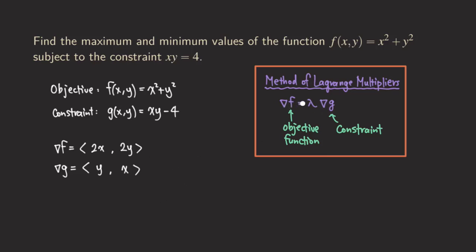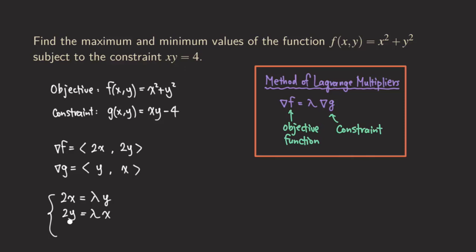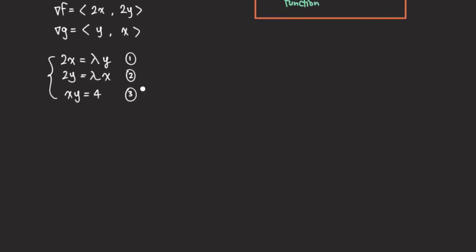We have ∇f = λ·∇g. Since both sides are vectors and λ is a scalar, we get the system: equation 1 is 2x = λy; equation 2 is 2y = λx; and the third equation is the constraint xy = 4. So now we have three equations to solve.